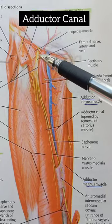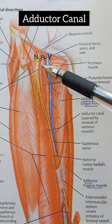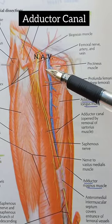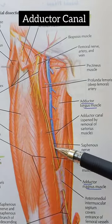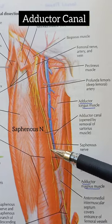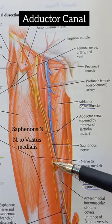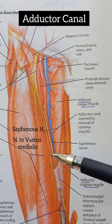The contents are the femoral nerve, femoral artery, and femoral vein. While in the canal, the femoral nerve divides into the saphenous nerve and the nerve to vastus medialis.